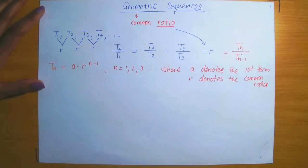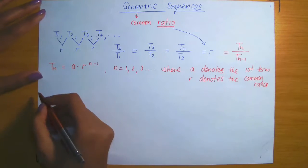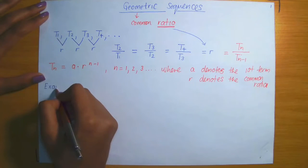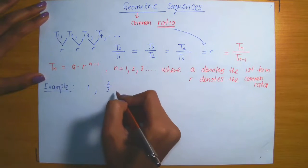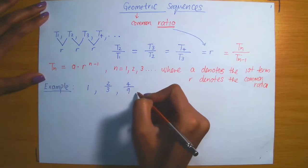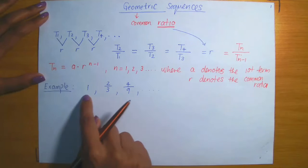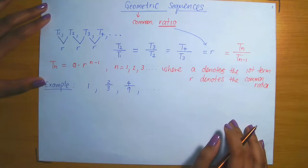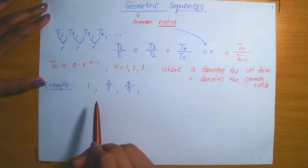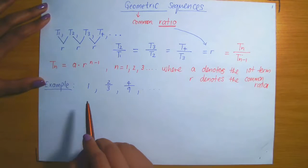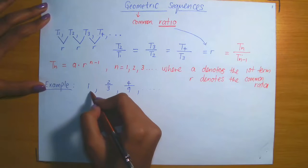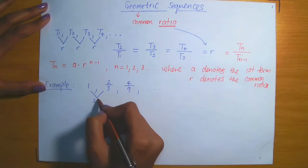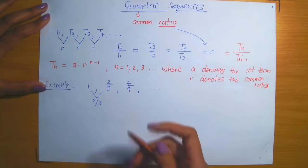Now that we have this formula at our disposal and understand what it means for a sequence to be a geometric one, let's consider the following example. Suppose I had given you the sequence with terms 1, 2/3, and 4/9, continuing in the pattern determined by these three terms. Let's first check: is this sequence a geometric sequence? We now have to find out what the ratios between consecutive terms are. Considering the first two terms, what is 2/3 divided by 1? It is 2/3.